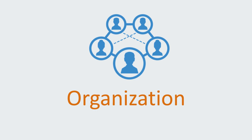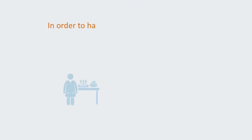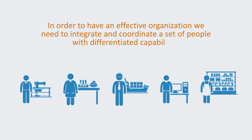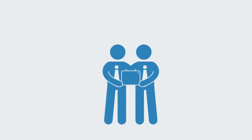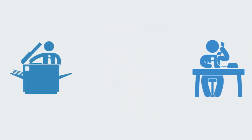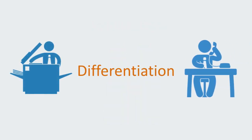Next, the process of management involves the organizing of people into a functional unit. In order to have an effective organization, we need to integrate and coordinate a set of people with different capabilities. Both of these terms — integration and differentiation — are important. Integration means they are working together; differentiation means they are doing different things. Without either of these, we don't really have an organization.